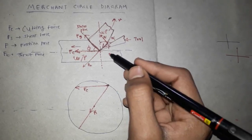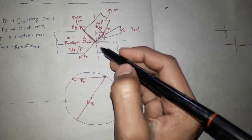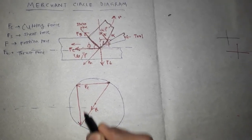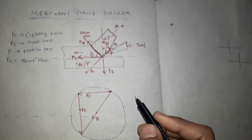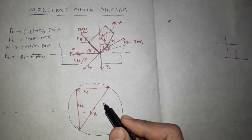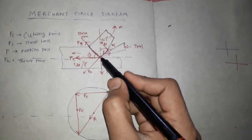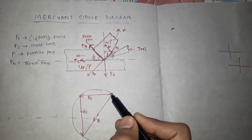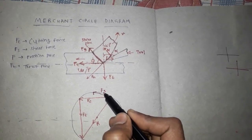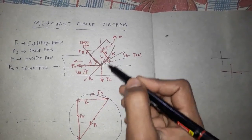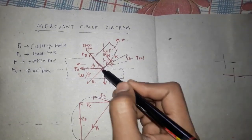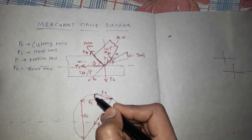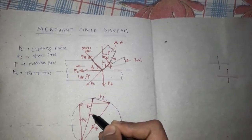When the cutting operation is performed, the thrust force also comes into play acting in the downward direction, so we draw the thrust force here. When the chip is sheared from the shear plane, the shear force is acting — so we draw the shear force here. Due to the force applied by the chip on the workpiece, there is a normal force acting perpendicular to the shear plane, denoted by Fn.